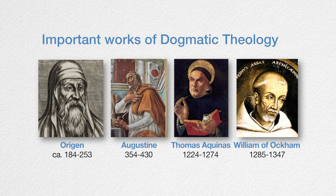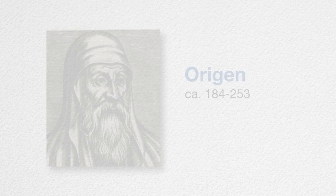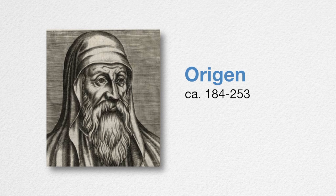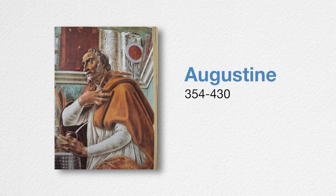Now if we look at important works of dogmatic theology: in the early church, there were people like Origen and Augustine who made very important contributions. Origen was a prolific and important thinker in the early church. Augustine, in his writings such as 'The City of God,' gave out some core doctrines — it is with him where we get the origins of the doctrine of original sin and the doctrine of predestination. These two, along with others, made very important contributions to dogmatics.